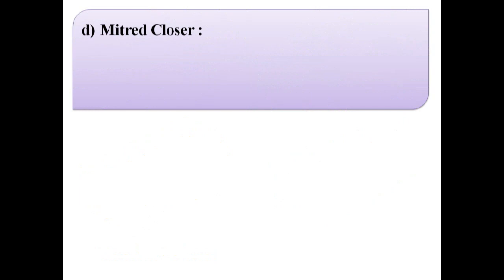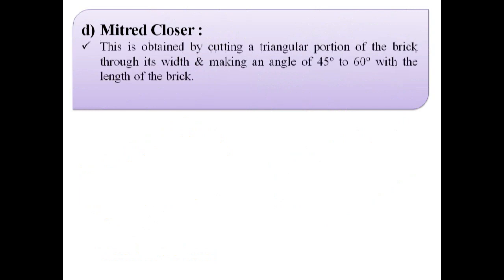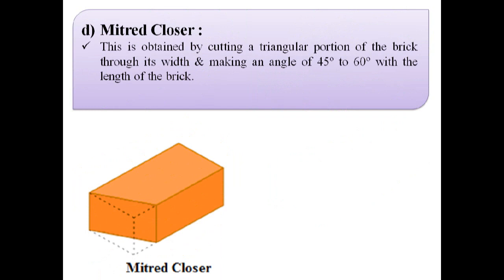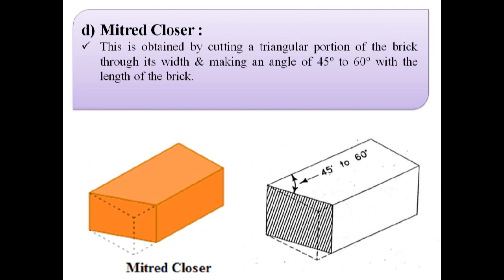The fourth type of closure is mitered closure. Mitered closure is obtained by cutting a triangular portion of the brick through its width, making an angle of 45 to 60 degrees with the length of the brick, as shown in this image. Mitered closure is used at corners, junctions, etc.